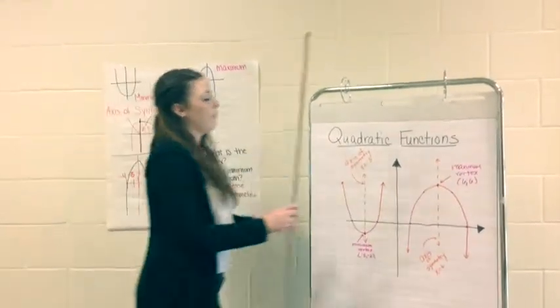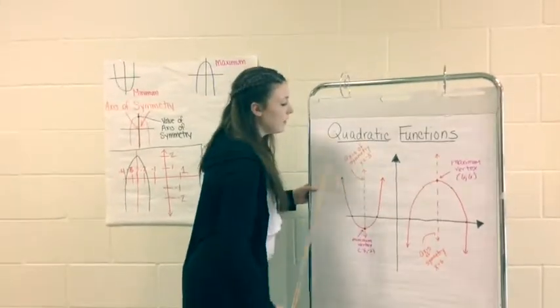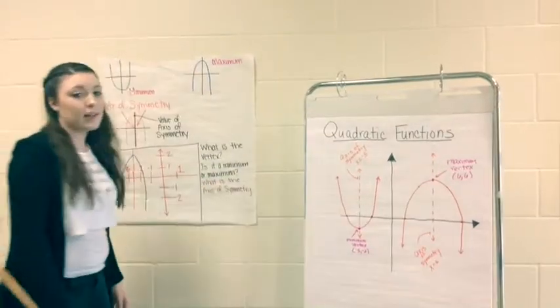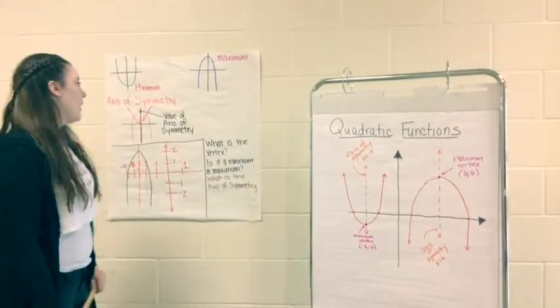The axis of symmetry goes down the middle of each thing. This one equals negative 5, and this axis of symmetry equals 6. Do you get it now? Kinda. Okay.